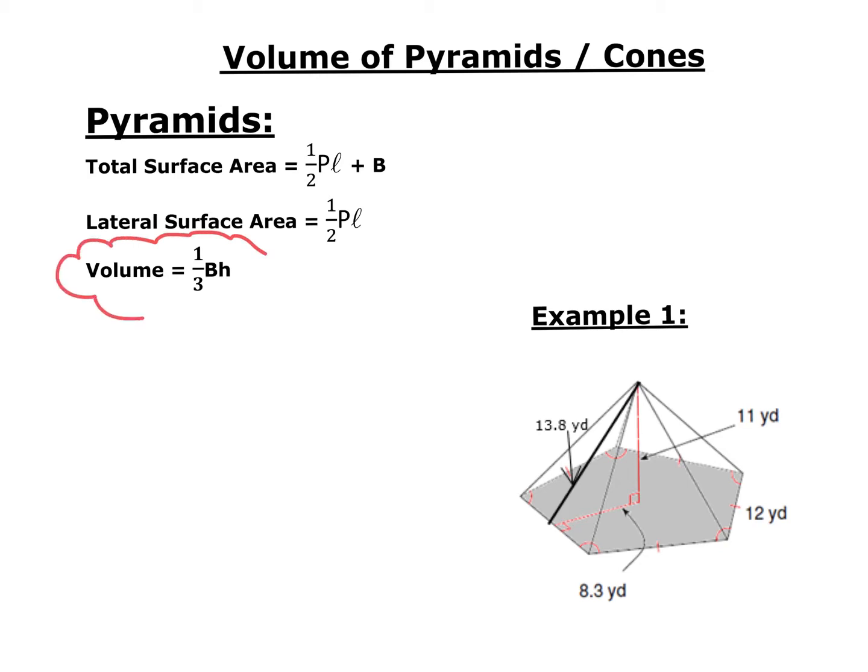Volume is that amount that would fill it up. Well, pyramids are smaller than prisms. As a matter of fact, they are one-third smaller, and so all we do is act like we're finding the volume of a prism only we divide it by three.